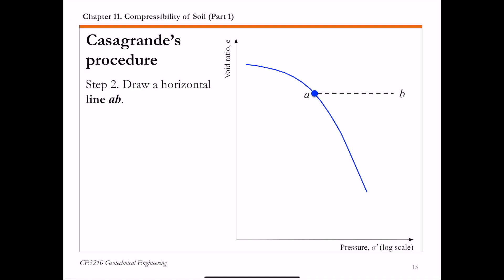The next step is to draw a horizontal line from point A, we call this line AB. Then draw a line AC, which is tangent to the curve at point A.